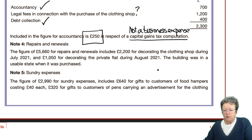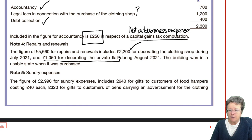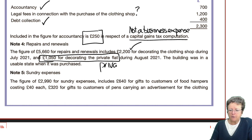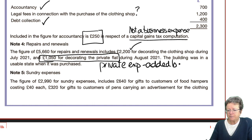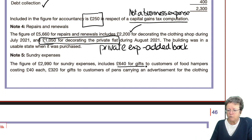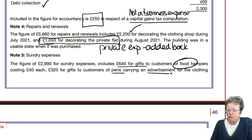Repairs and renewals: £2,200 included for decorating the shop — that's okay. But look at this: there's also decorating the flat — that's a private expense, needs to be added back. Sundries — gifts to customers: the rule was £50 unless it's food, in which case it has to be added back. But gifts to customers that are pens with an advert — they're fine.